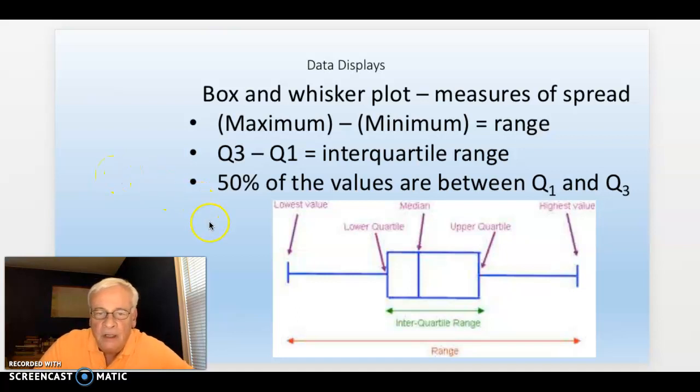A box and whisker plot will tell us some measures of spread. Like it'll give us the range. The range is the highest value minus the lowest value: the maximum minus the minimum.